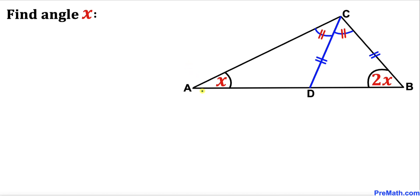In this video we have triangle ABC such that line segment CD bisects angle C into two equal angles. Moreover, angle B is twice angle A, and line segment CD is equal to line segment BC. We are going to calculate angle X.